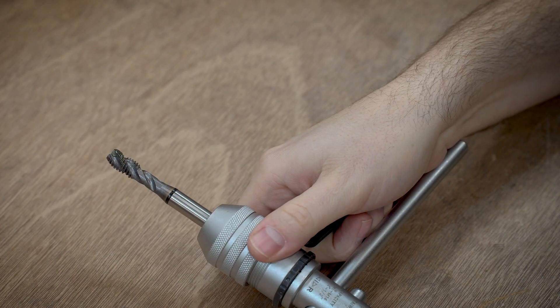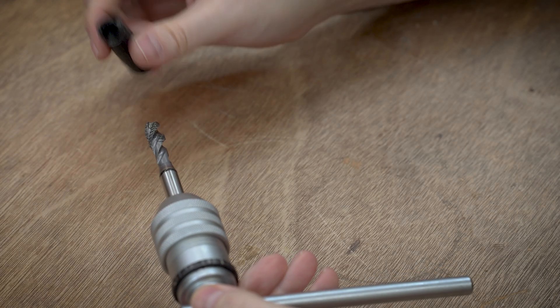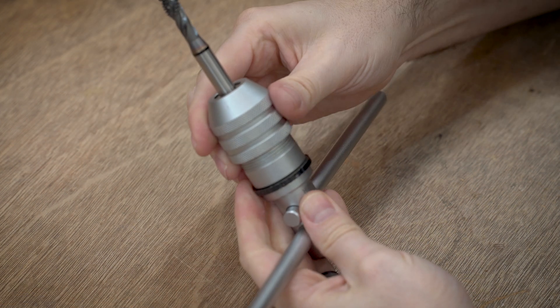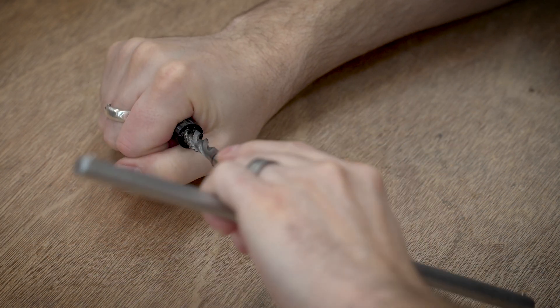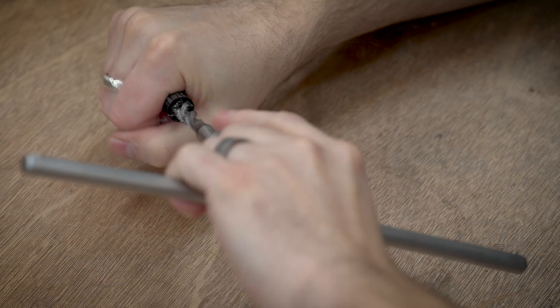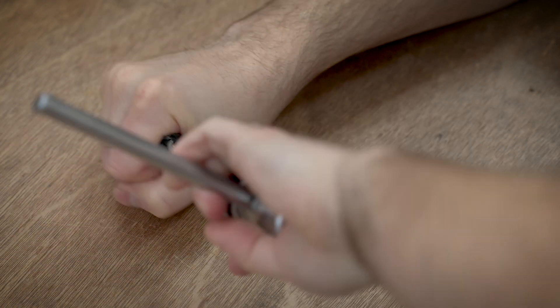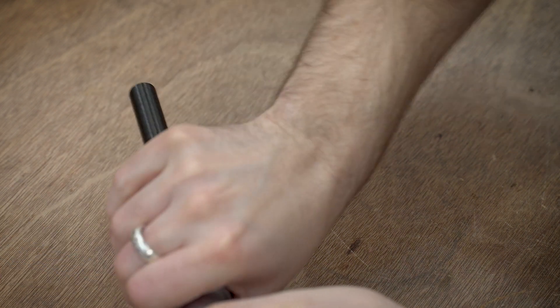Of course you could design this part with print in place threads. I know a lot of people have had success with the threads. This is a 3816 which should be pretty easy to print in place. It's probably not going to be as strong as tapped threads but I don't think it's really going to matter for this. I just kind of like tapping sometimes. If I was doing like a hundred of these I would absolutely print the threads in place but doing one of these I'll just tap it on camera.